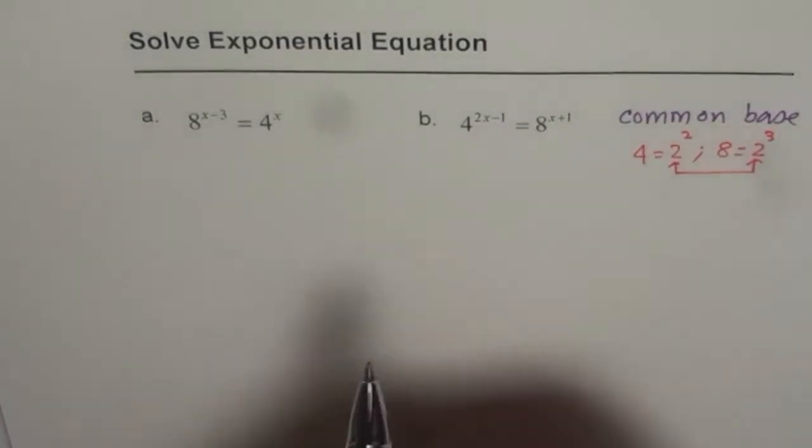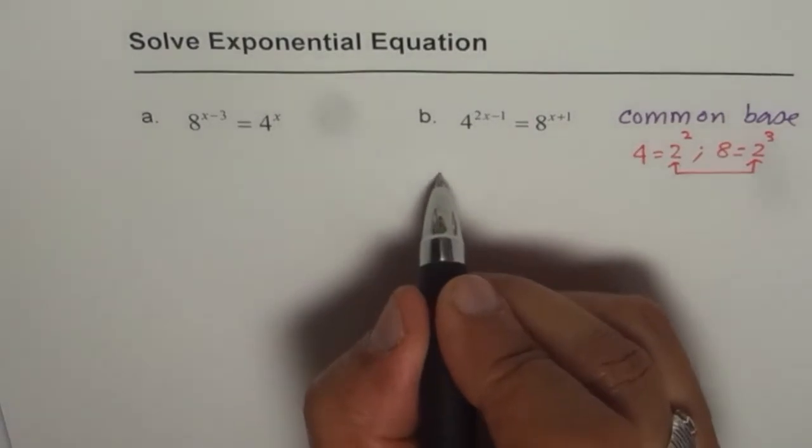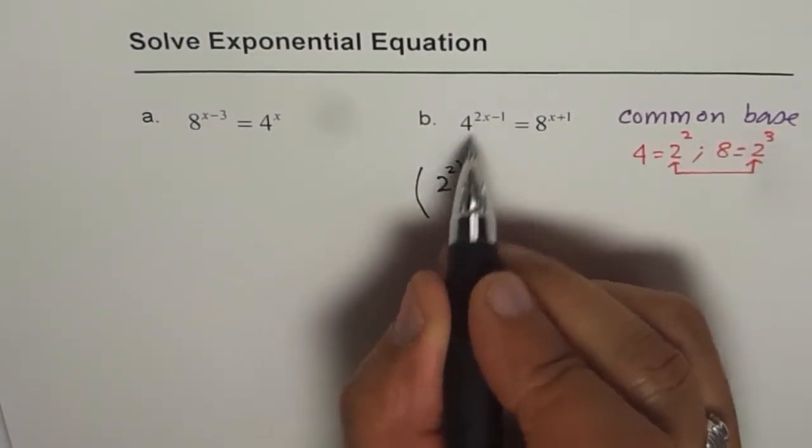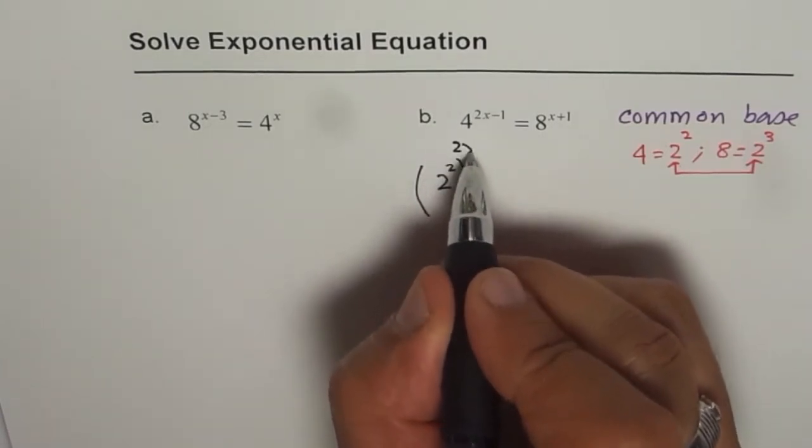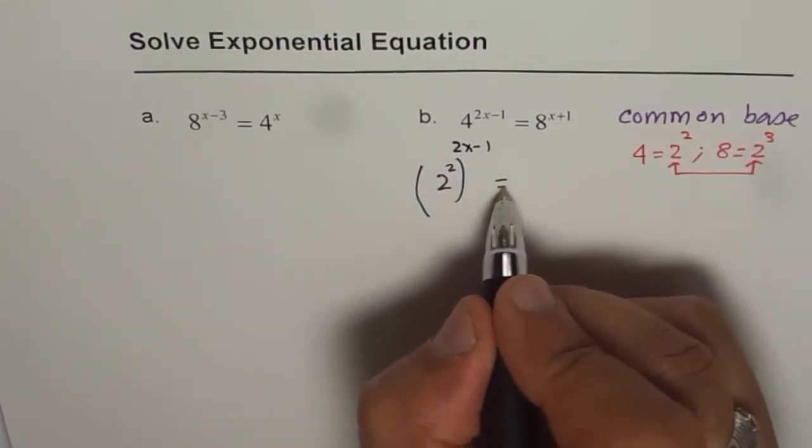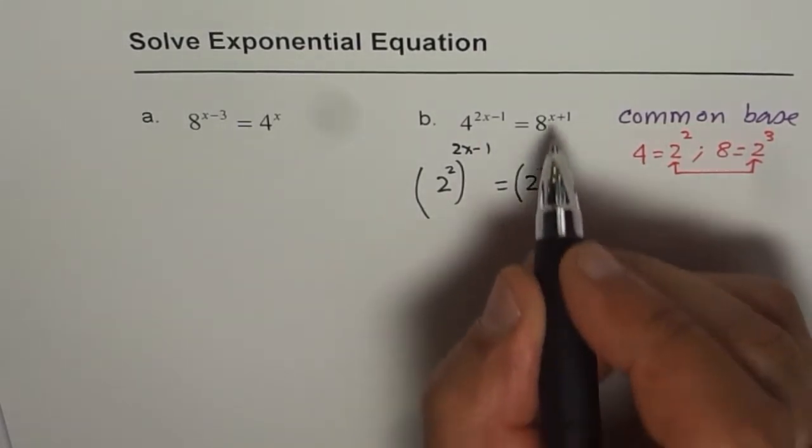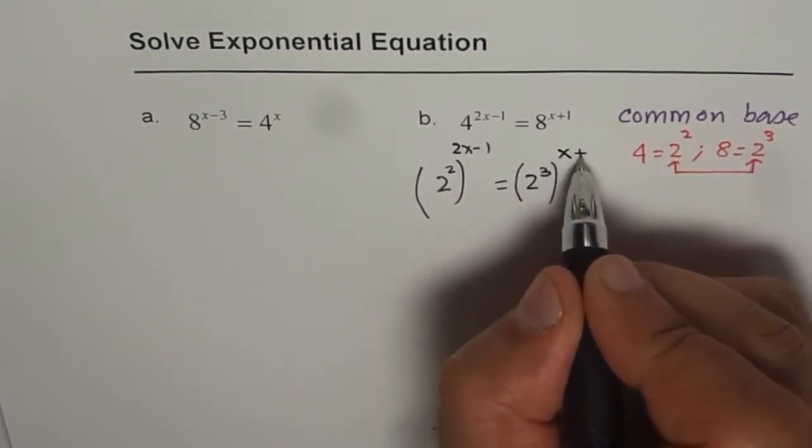So I am writing 4 as 2 squared. What do I have on the left side? I have 2 squared. Now earlier, 4 to the power of 2x minus 1, so let me write 2x minus 1 as its exponent. Similarly, 8 I am writing as 2 cubed, right? 2 cubed to the exponent of x plus 1.